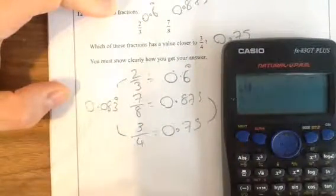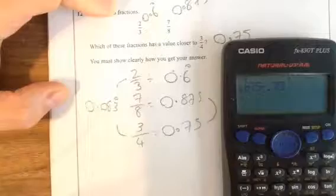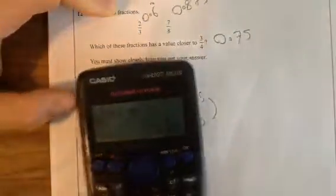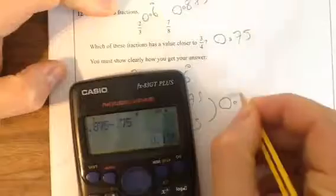And the difference between these two. I'm going to put 0.875 minus 0.75. One eighth. So, it's 0.125.